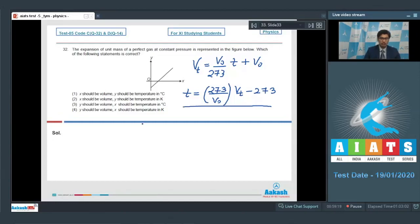When comparing this equation with the equation of straight line that Y is equal to MX plus C, we can see that the slope would be equal to 273 by V0 and the intercept will be minus 273. And for this equation, on the Y axis, it should be temperature in degree Celsius and on the X axis, it should be volume. And therefore, option number 1 is the correct answer.